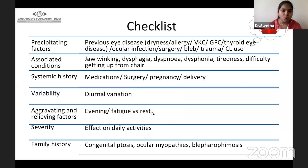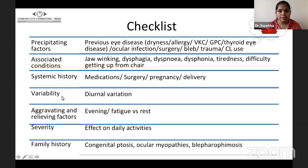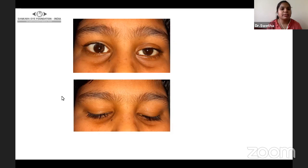Medication history is particularly important in case of statins. Any history of surgery, any history of variability, aggravating and relieving factors, severity, and family history are particularly important in cases of congenital ptosis, myopathies, and blepharophimosis. This patient — a 10-year-old boy — presented with left eye ptosis since two years. He had very good levator function and a slightly higher level of the lid crease, which was not correlating with congenital ptosis.